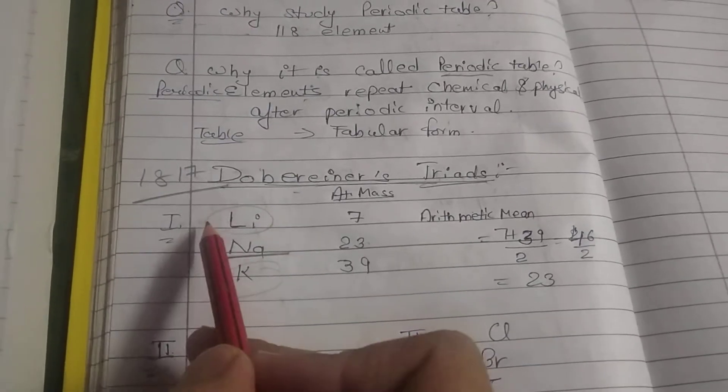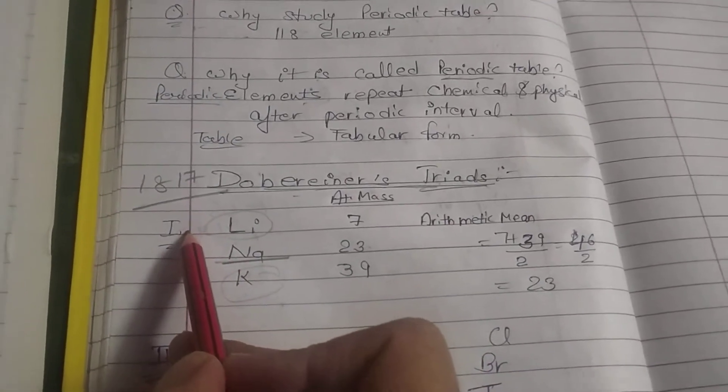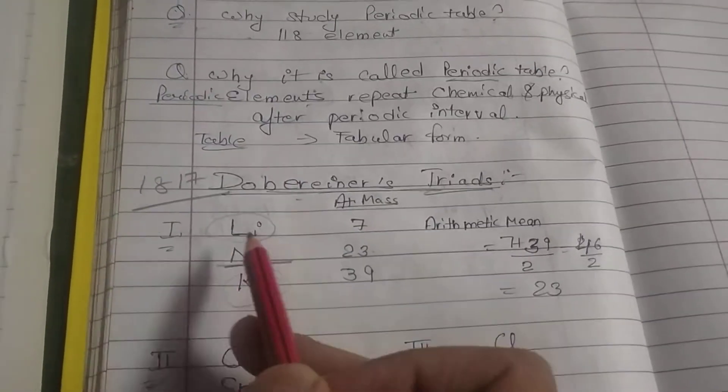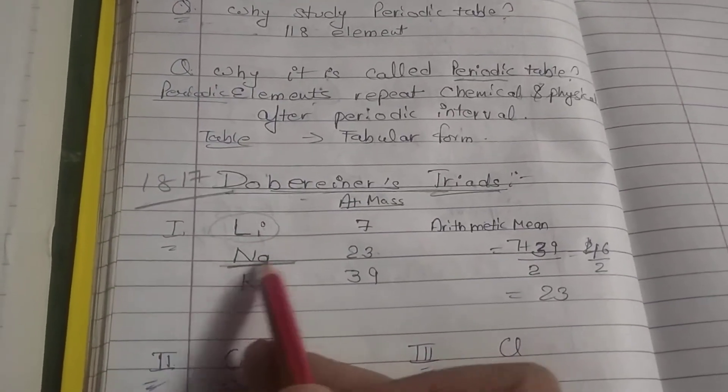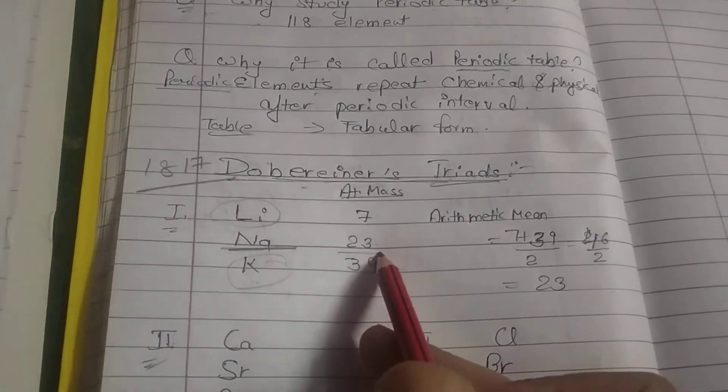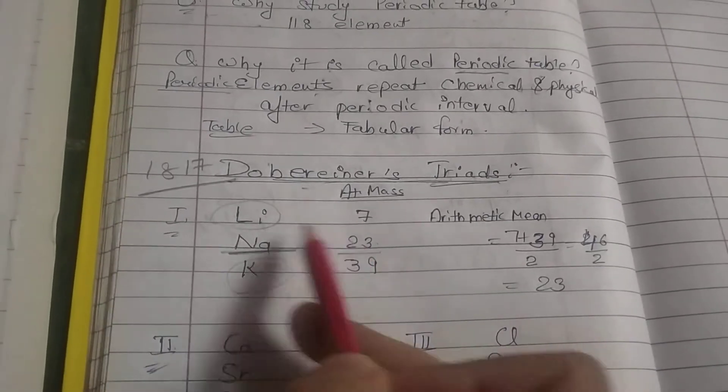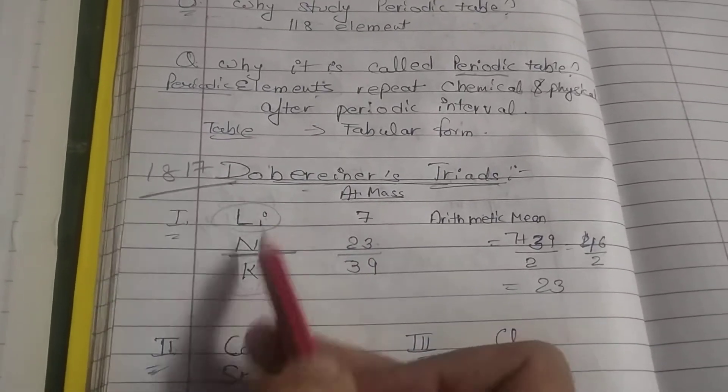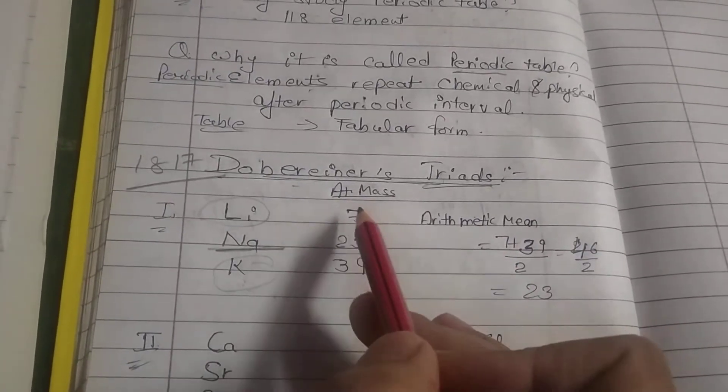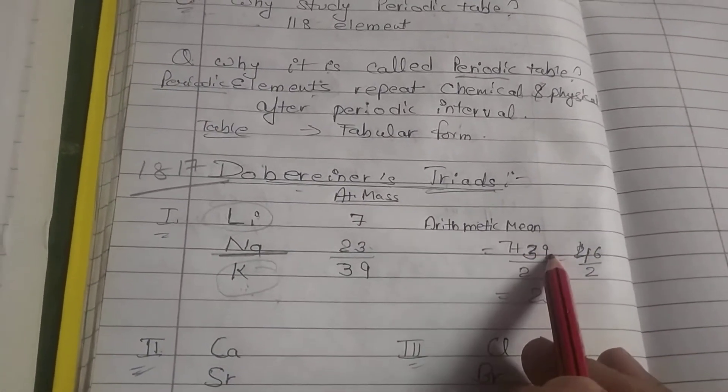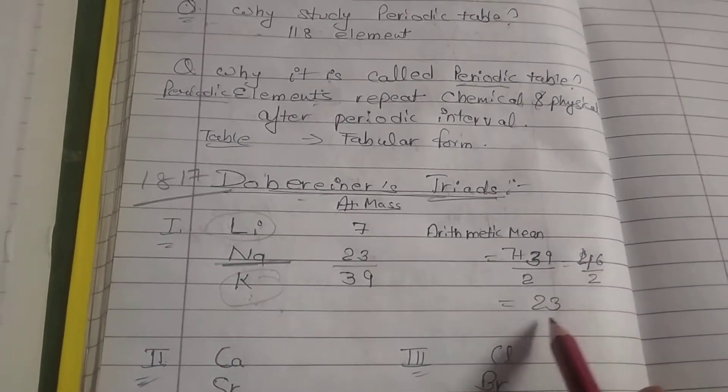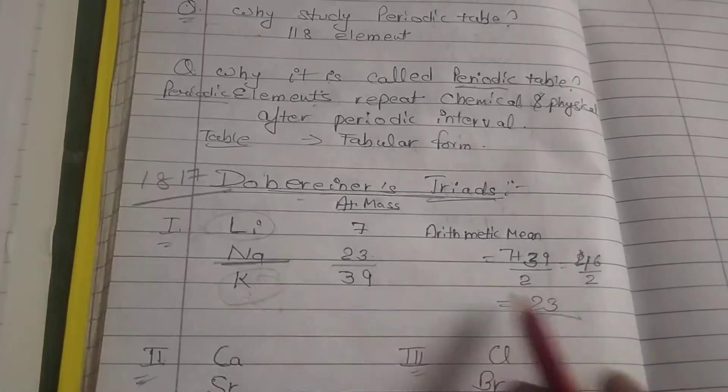The first triad that Dobereiner gave us: Lithium, sodium, potassium. The atomic mass of the middle element, sodium, is 23. The arithmetic mean of the other two elements, lithium and potassium, when we find the atomic mass, that is 7 plus 39 upon 2, that is 46 upon 2, equals 23. This is the atomic mass of sodium.